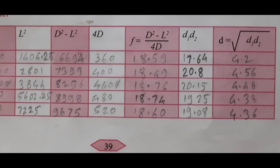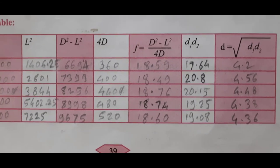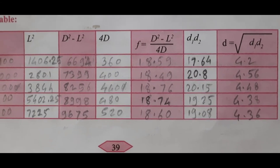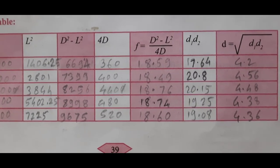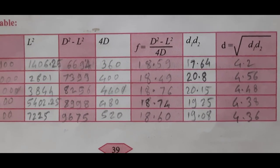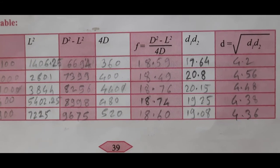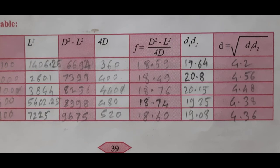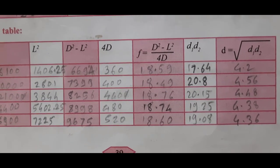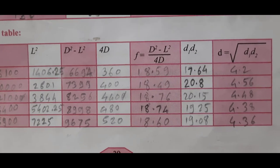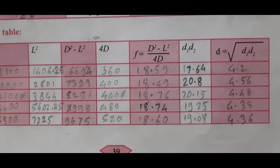The five calculated values of focal length of the convex lens are: 18.59, 18.49, 18.76, 18.74, and 18.60. We then find the mean of these F values by adding all five and dividing by 5 to get the mean focal length.